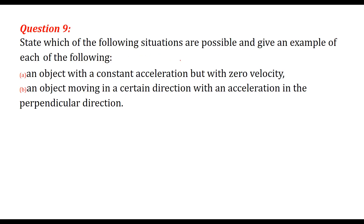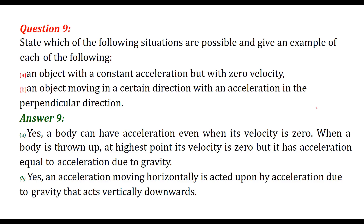State which of the following situations are possible. An object with constant acceleration but zero velocity: when you throw a ball upward, at the highest point the velocity is zero but gravity still acts, so acceleration is constant. An object moving in a certain direction with acceleration in a perpendicular direction is also possible — for example, a ball thrown horizontally with gravity acting downward.